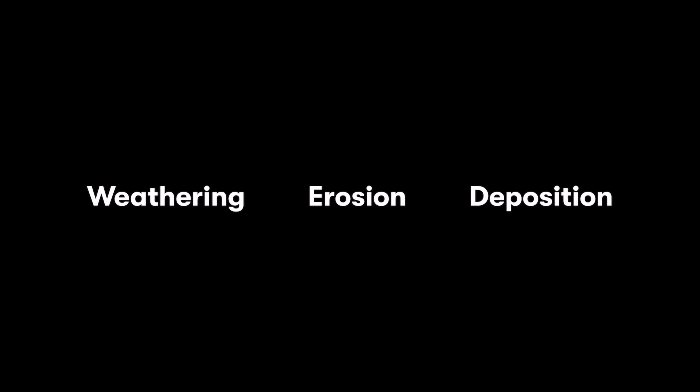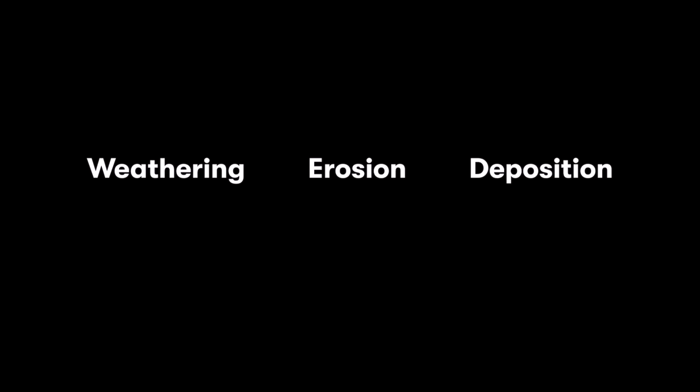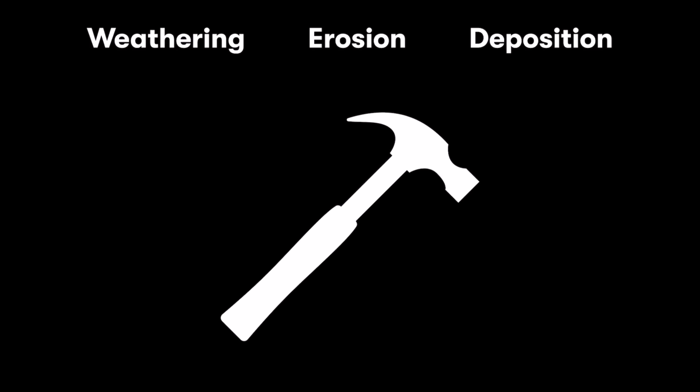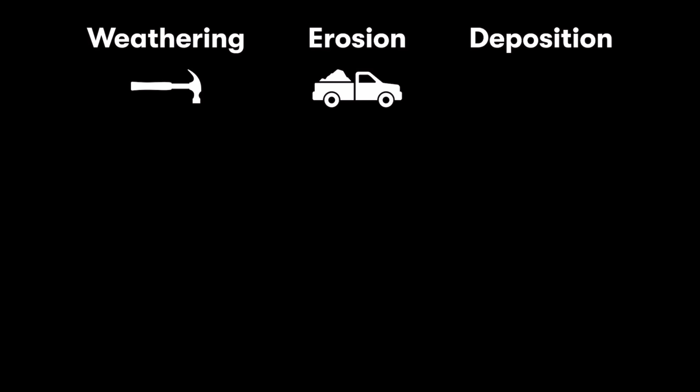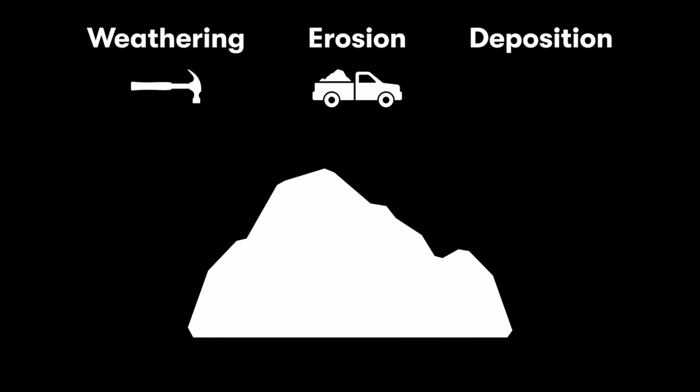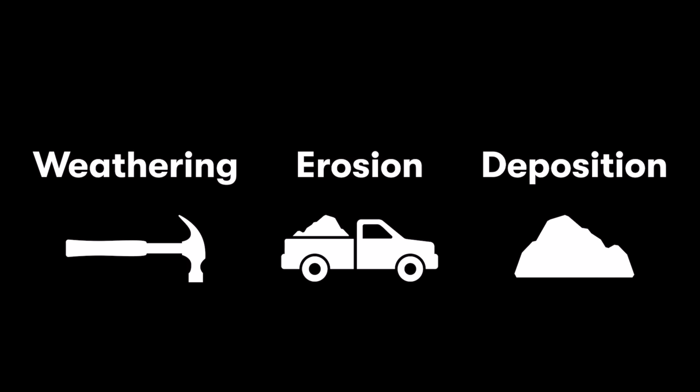A helpful analogy to remember the differences: weathering is like nature's hammer — mother nature's way of taking big bits of rock and smashing them into smaller bits or changing them into something new. Erosion would be like a dump truck carrying all the little bits and pieces broken apart by weathering from one location to another. And deposition is that dump truck opening its tailgate and dumping everything out into a big pile on the ground.